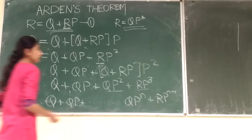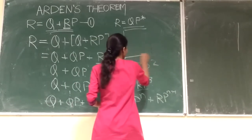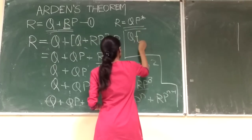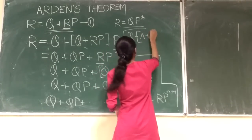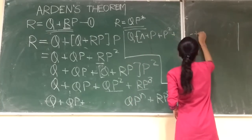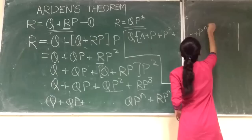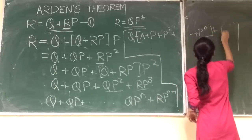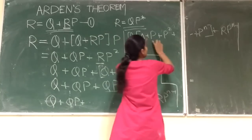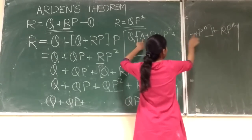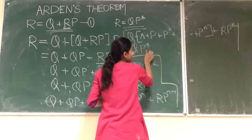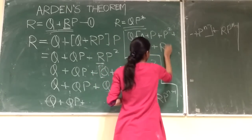Taking Q as common, we will get Q times (null + P + P² + ... + P^n) plus RP^(n+1). This term — null + P + P² + ... + P^n — according to Kleene's closure, it will be P*. So we get QP* + RP^(n+1).